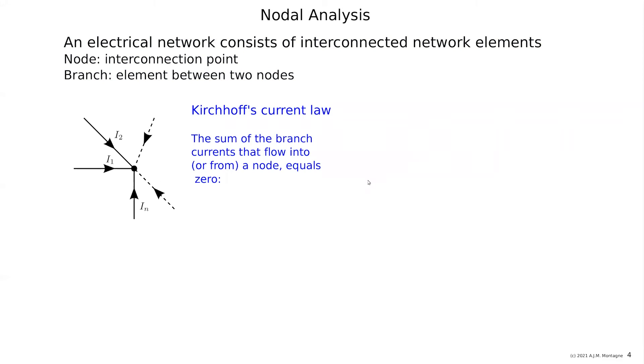So here, Kirchhoff's current law, that's what we are going to use. The sum of the branch current flowing into or from a node equals zero. So the sum of all these currents equals zero.